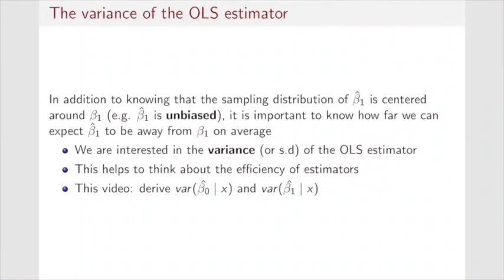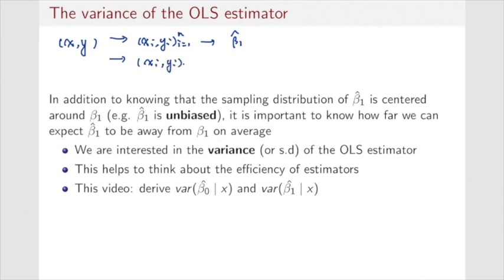In the last video, we explained that the estimators β̂₀ and β̂₁ are random variables — they can be treated as functions of the random sample (x, y). When we draw a sample of n observations, we get an estimator β̂₁. When we draw another sample, we get a new β̂₁. Imagine drawing infinite samples; we will have infinitely many β̂₁ values, and from those we can form a distribution of β̂₁.